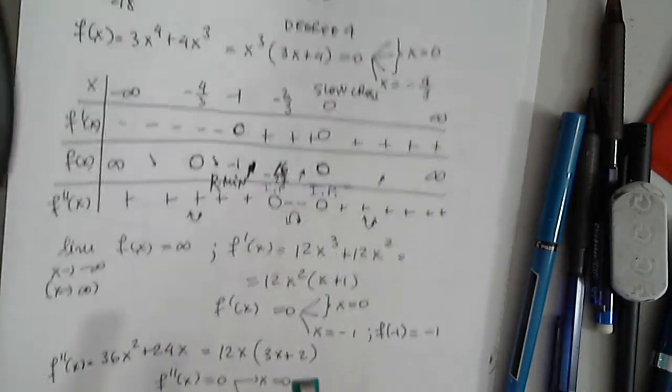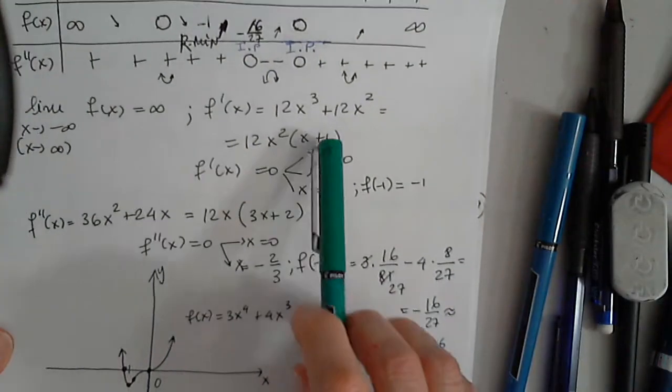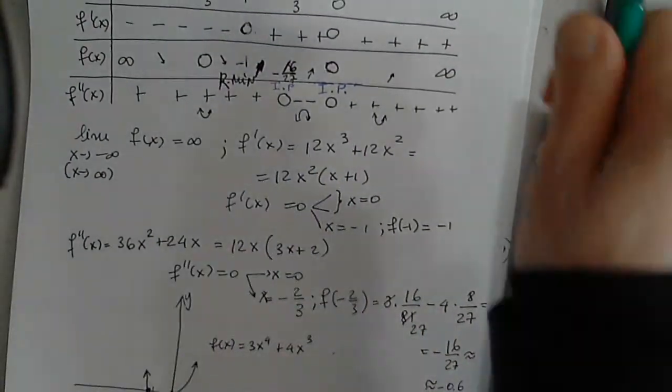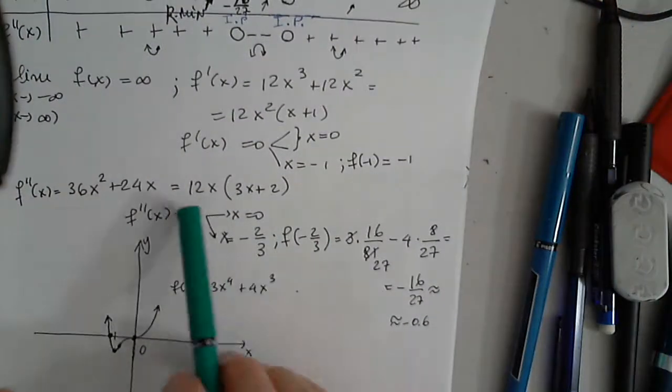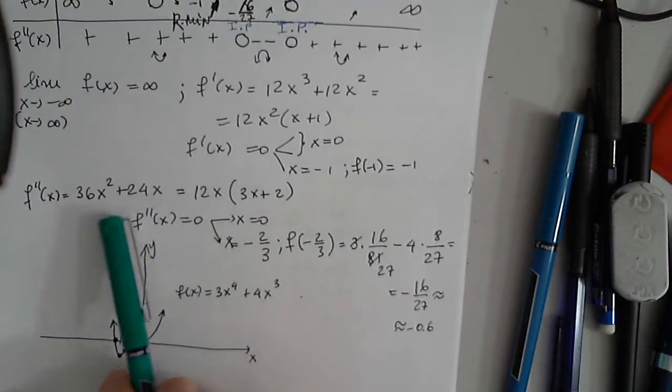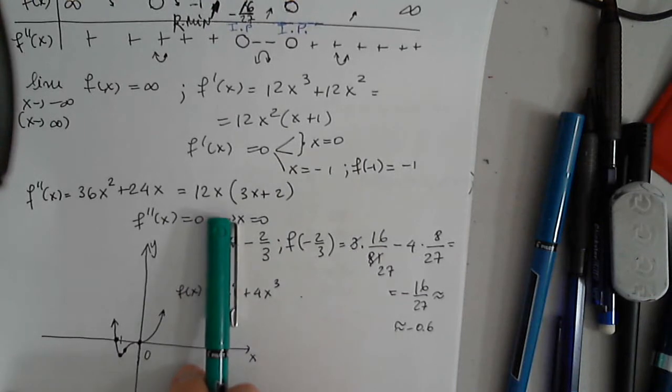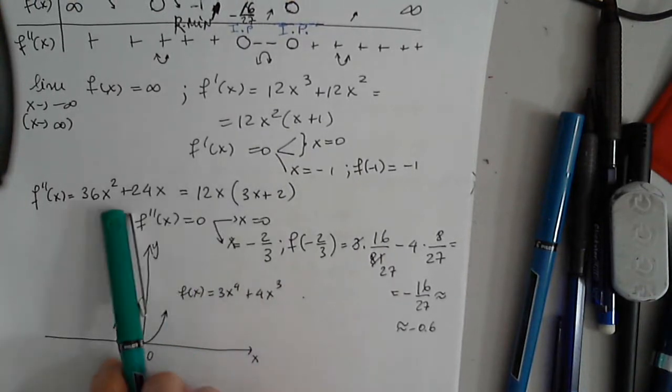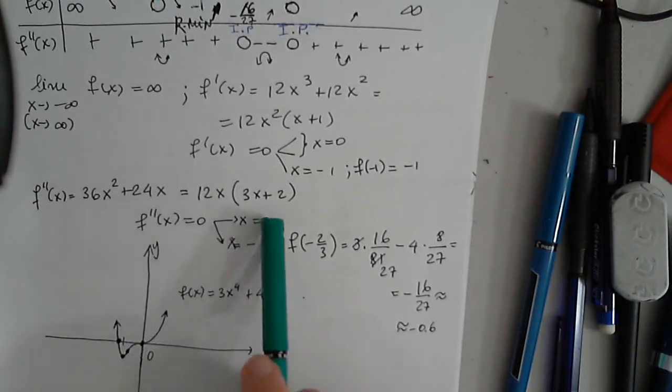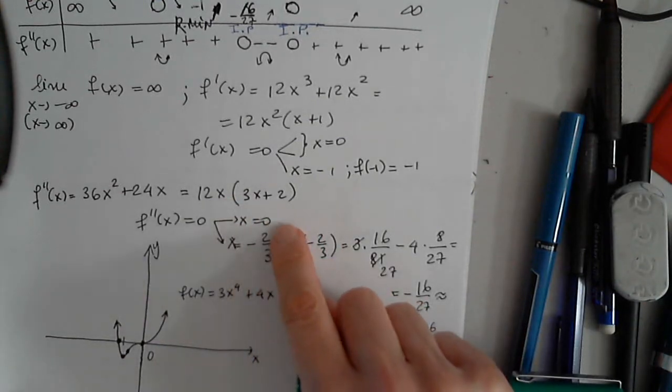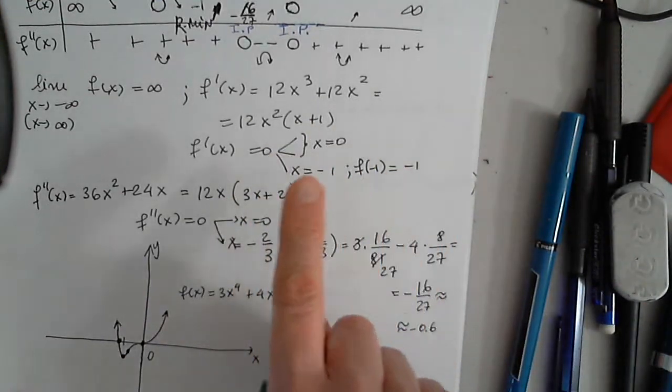I move on to the second derivative. Multiply 36. So 36x squared plus 24x, of course, immediately factor out 12x, have 3x plus 2.